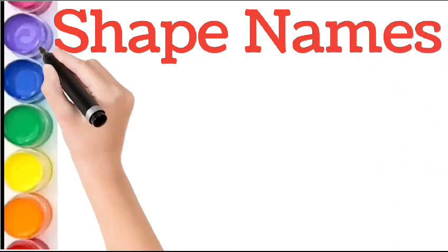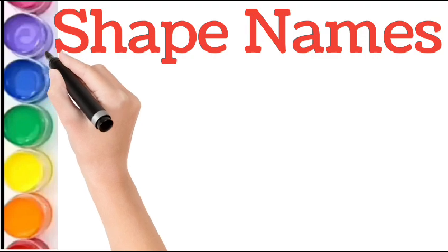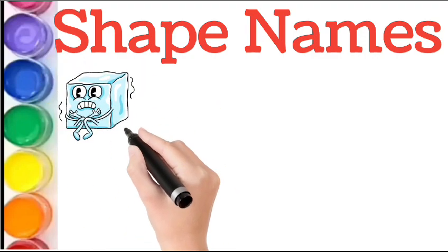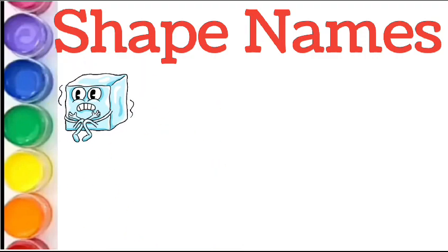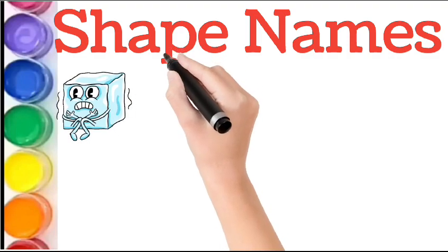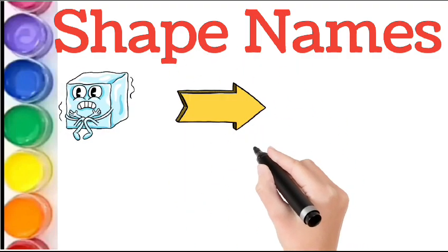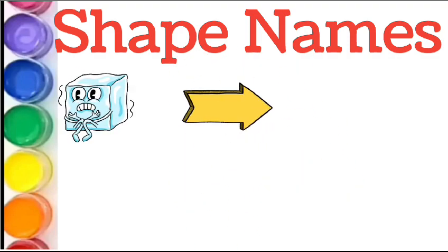First of all, cube. Cube just like a play. The next one is arrow.